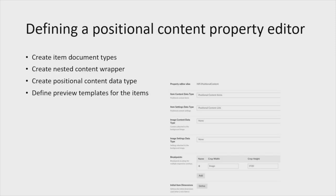So how do you build a positional content property editor? It all starts with document types - it's very deeply integrated into Umbraco - and then you wrap it in a nested content wrapper. Thanks Matt for that one; it wouldn't be possible without nested content. Then you create a positional content data type and assign all the different parts: content for the items you're positioning, settings for styles, content aside to the image, and settings for the image as well. Then you set up breakpoints, define your crop settings for particular breakpoints, and define what pixel widths those work from.